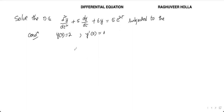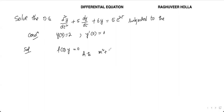Let us see the different methods to solve this problem. The regular method first requires writing the equation in the form f(D)·y = 0, equating to zero to make it a homogeneous equation and find the complementary function. The auxiliary equation corresponding to this is m² + 5m + 6 = 0, a quadratic equation with two solutions: m = -2 and m = -3.